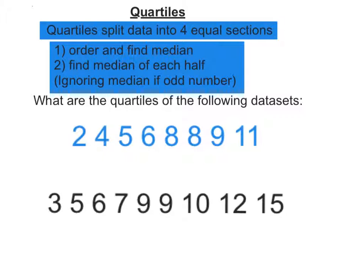Let's start on this first one. So let's find the median. So we've got 2 and 11, 4 and 9, 5 and 8, and we've got two numbers left, so it's in the middle. So the median, or Q2, is 7.